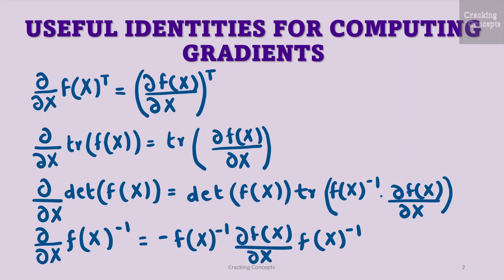Here we will see some useful gradients that are frequently required in a machine learning context. We will use tr as trace, det as determinant, and f inverse as the inverse of f, assuming that it exists. d by dx of f transpose can be written as d by dx the whole transpose. d by dx of trace of f is trace of d by dx. d by dx of determinant of f can be written as determinant of f into trace of f inverse d by dx.